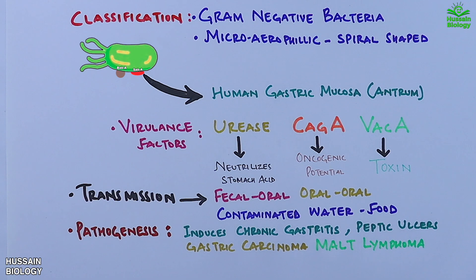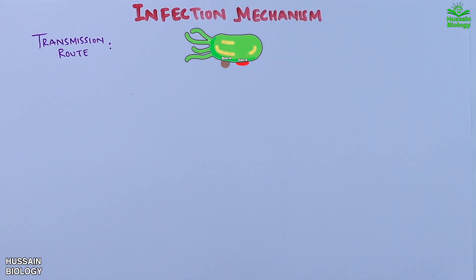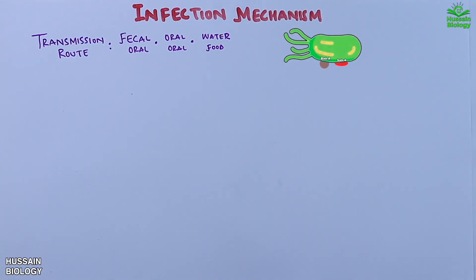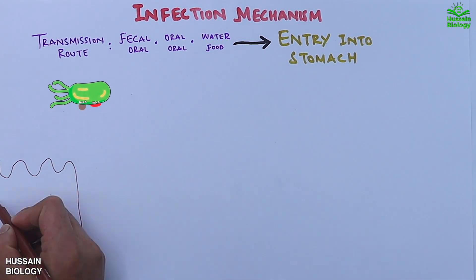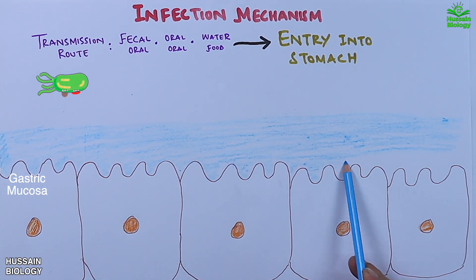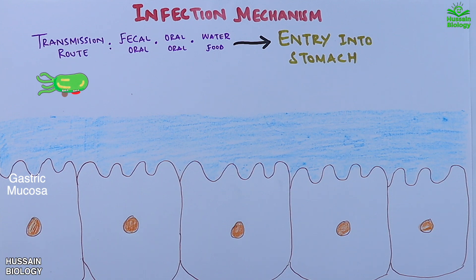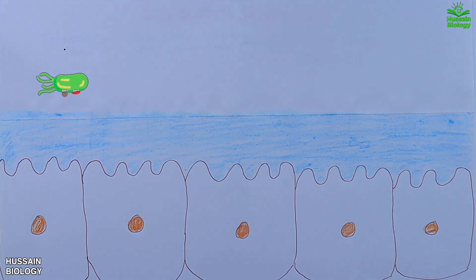Now let's look at the detailed infection mechanism. The transmission route is fecal-oral, oral-oral, or via contaminated food or water, through which it enters the stomach. In this diagram we have the gastric mucosa and epithelial cells lining the stomach. This part of the stomach is the antrum, because it is here where the bacterium attacks. Furthermore, on the gastric mucosa there is a mucus layer, as shown in the diagram.